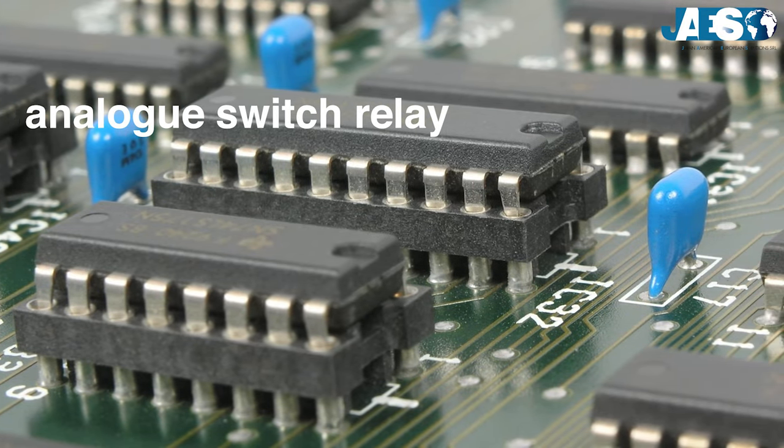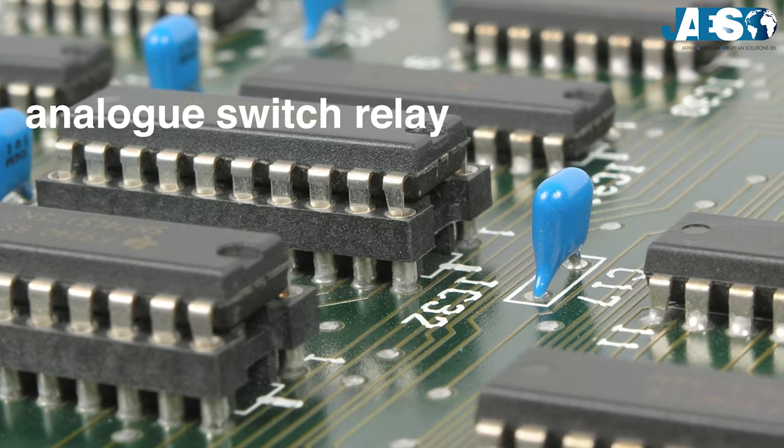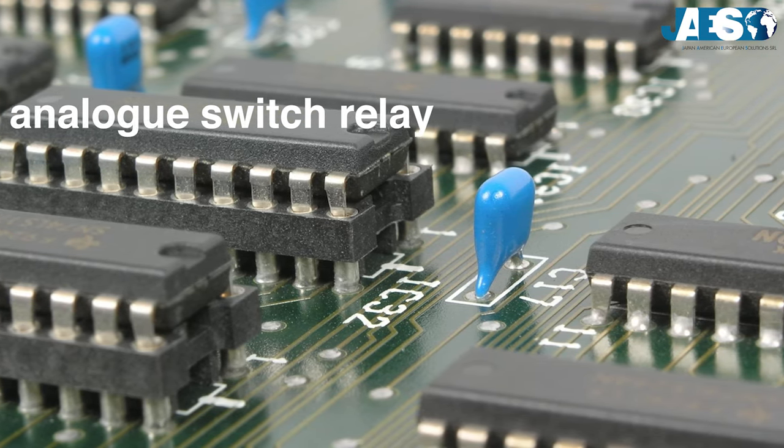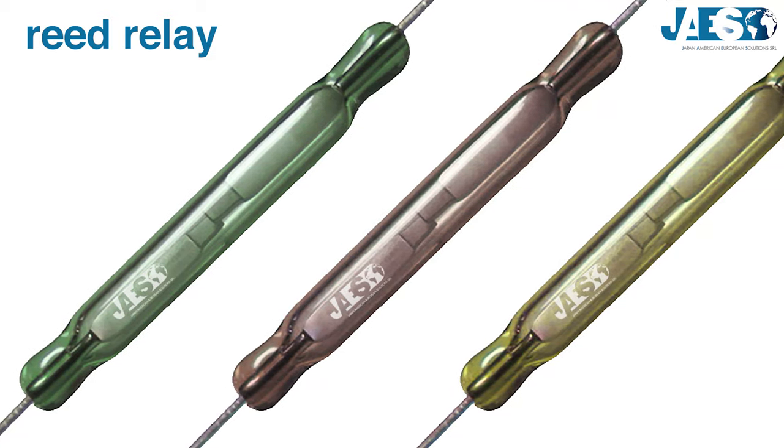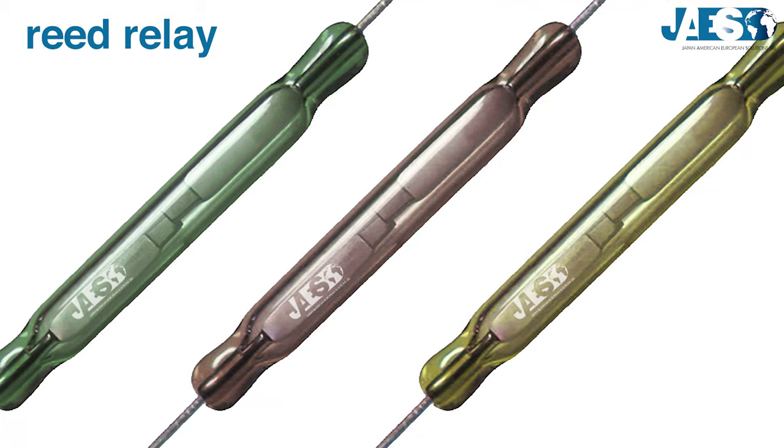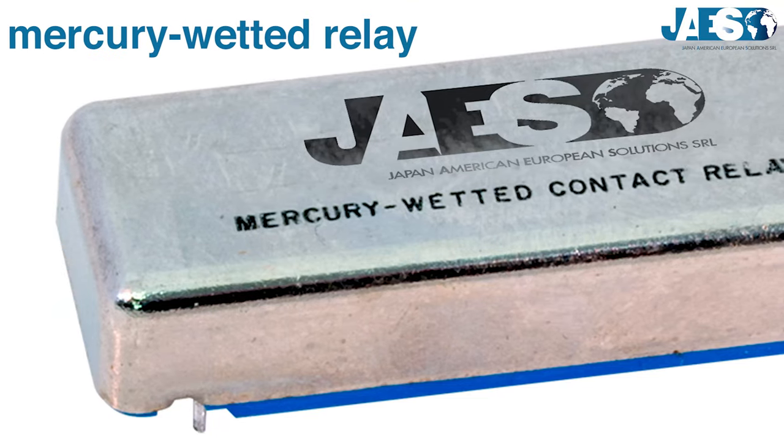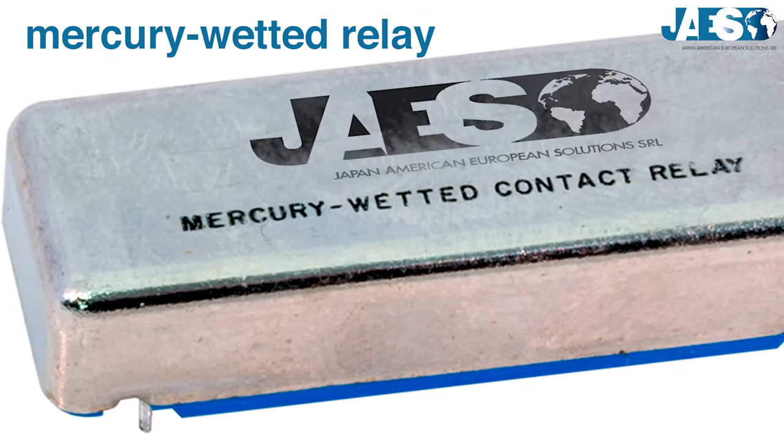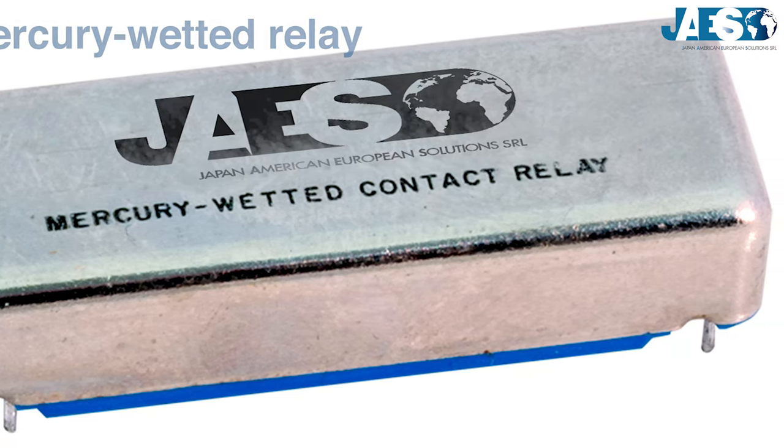There are many other types of relays, such as the analog switch, similar to integrated circuits. The reed relay, a type of relay where the contacts are sealed in a glass tube filled with inert gas. Mercury wetted relay, whose mobile plate is wetted with mercury, a conductive liquid metal.